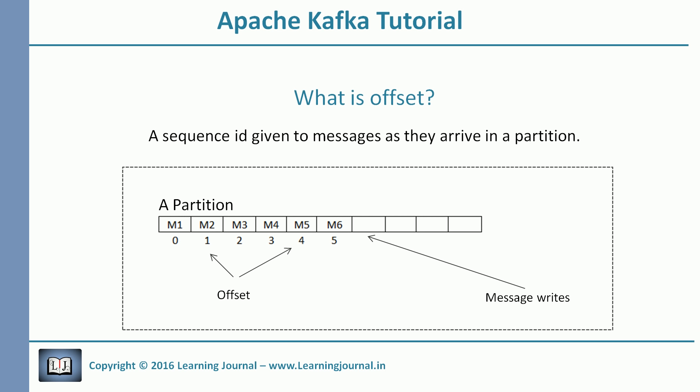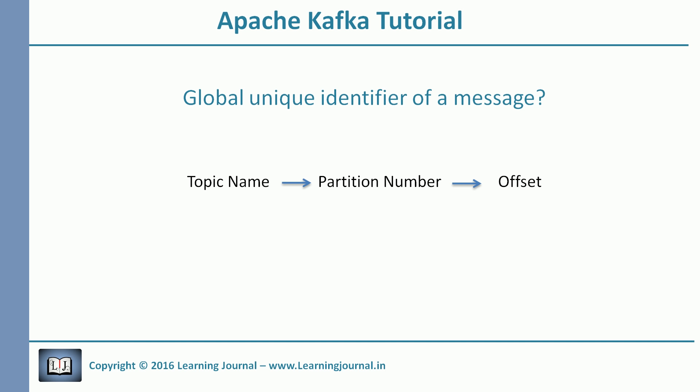Now let's talk about offset. The offset is simply a sequence number of a message within a partition. This number is assigned as the message arrives and, once assigned, never changes — they are immutable. Kafka stores messages in the order of arrival within a partition: the first message gets offset 0, the next gets offset 1, and so on. There is no global offset across partitions; offsets are local to the partition. To locate a message, you need three things: topic name, partition number, and offset number.